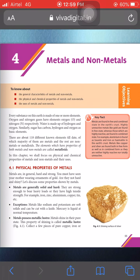Every substance on this earth is made up of one or more elements. For example, water — the formula of water is H₂O, where H stands for hydrogen and O stands for oxygen. Both hydrogen and oxygen are elements. These elements are further divided into three categories: metals, non-metals, and metalloids.